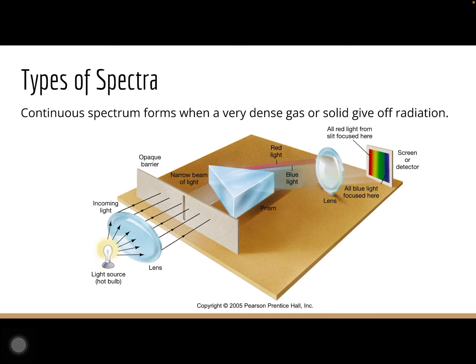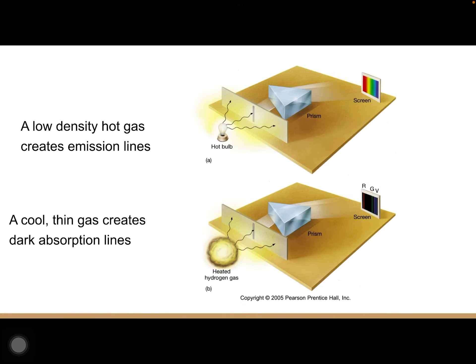There are different types of spectra. The continuous spectrum forms from a very dense or solid object giving off radiation. Light from a source goes through a lens, through a narrow slit, bends through a prism, and produces the full continuous spectrum. If instead you have a low-density hot gas, it creates emission lines — bright colored lines on a black background. A cool thin gas creates dark absorption lines — you see the continuous spectrum with dark lines where certain wavelengths are absorbed.